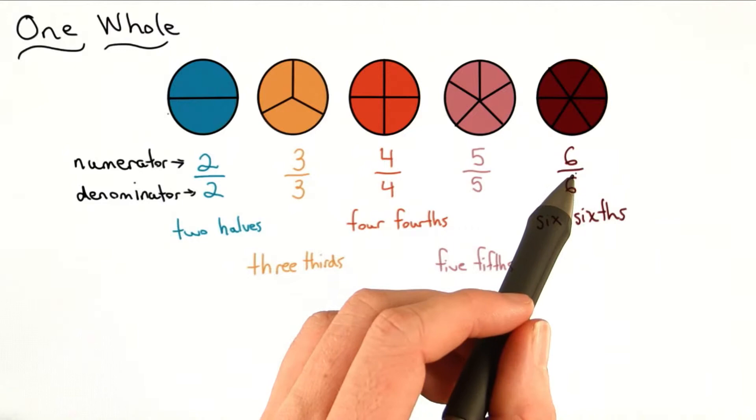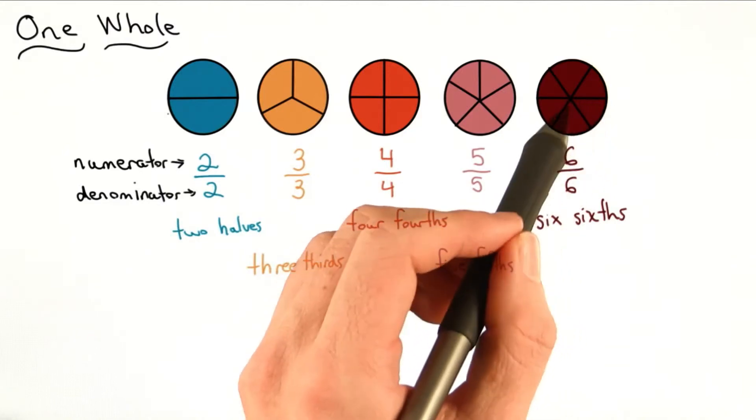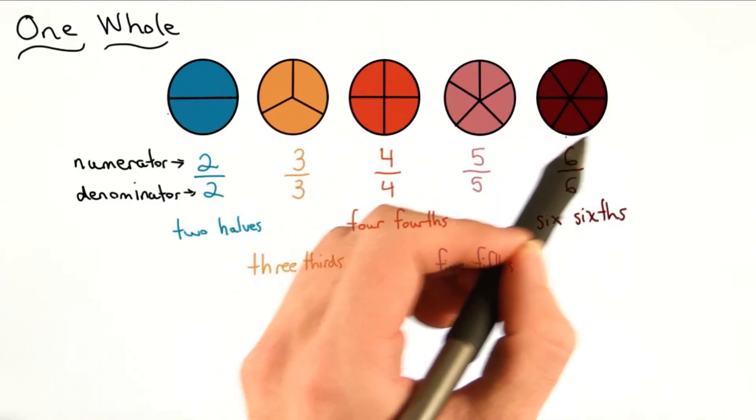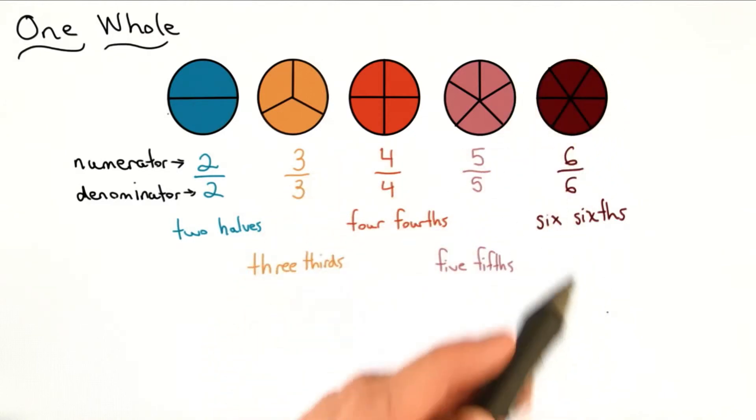So for example, with 6, I have 1 sixth, 2 sixths, 3 sixths, 4 sixths, 5 sixths, and 6 sixths, or 1 whole.